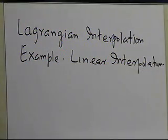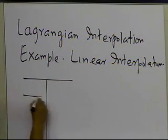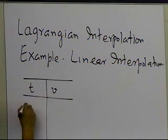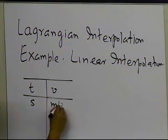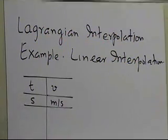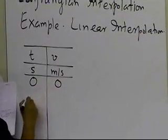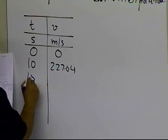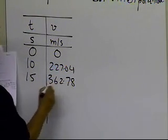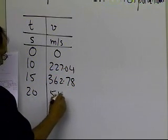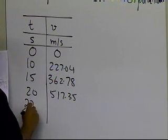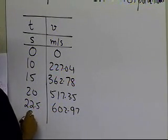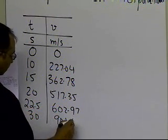Suppose somebody is giving you data like this: velocity versus time for a rocket. Time is given in seconds, velocity in meters per second. At t=0, velocity is 0; at 10 it is 227.04; at 15 it is 362.78; at 20 it is 517.35; at 22.5 it is 602.97; and at 30 it is 901.67.